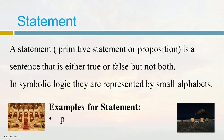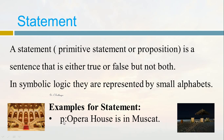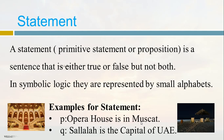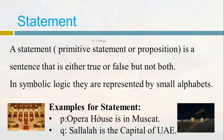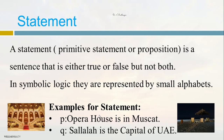Let us take some examples. The first statement is 'Opera House is in Muscat' — we use the symbol p for this. The second statement is 'Salalah is the capital of UAE' — we use the symbol q. For 'Opera House is in Muscat,' you are able to say yes or no. For 'Salalah is the capital of UAE,' you are also able to assign one value — yes or no. So if any one value is possible to assign, we call that sentence a statement.